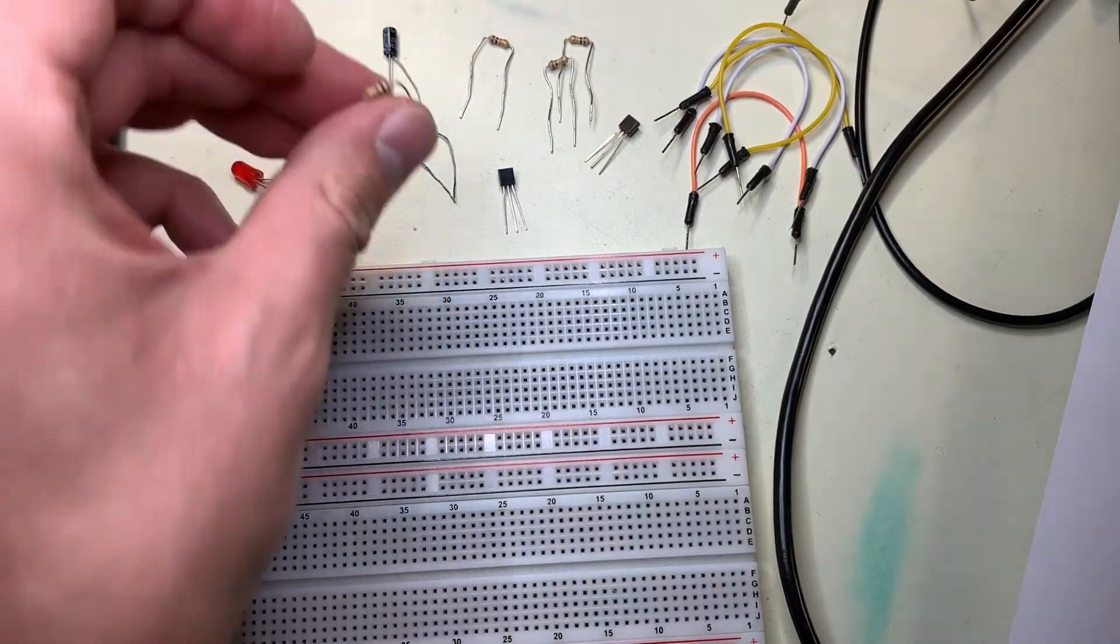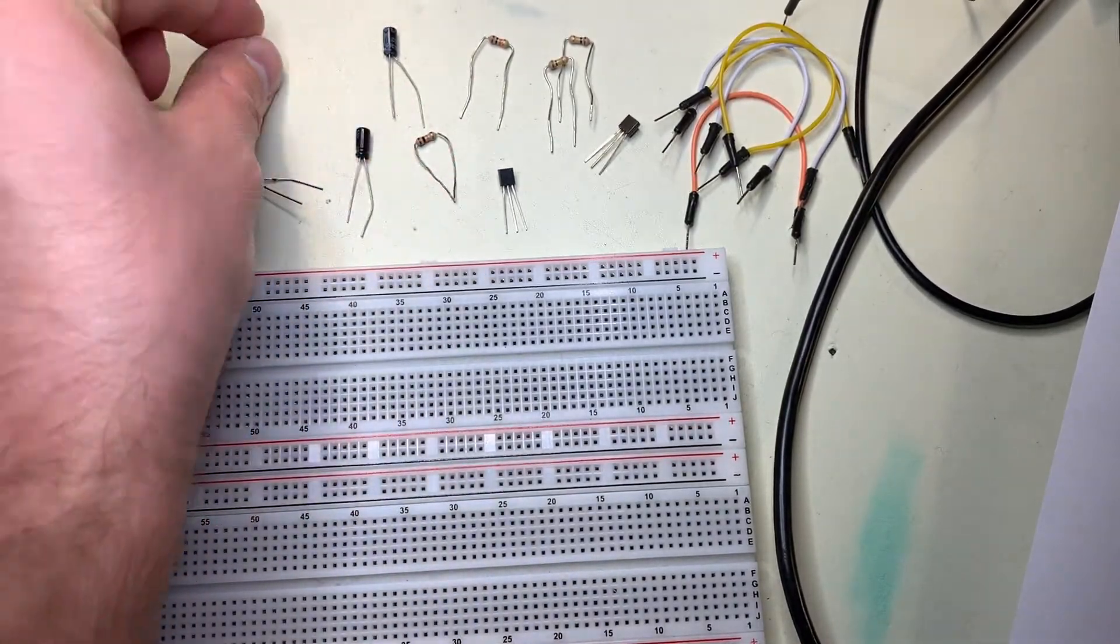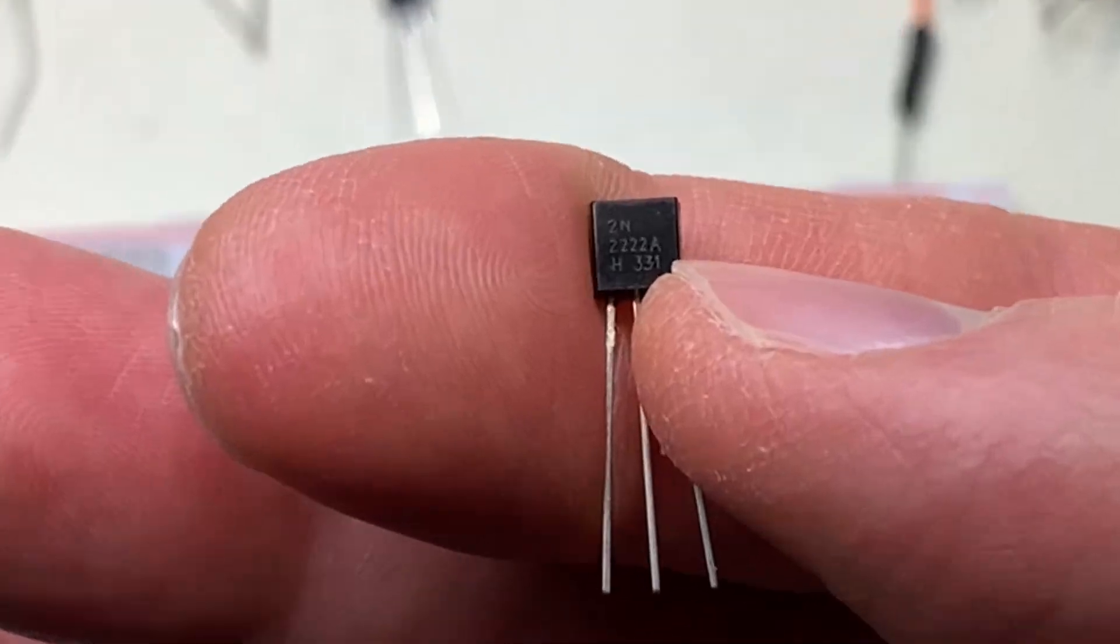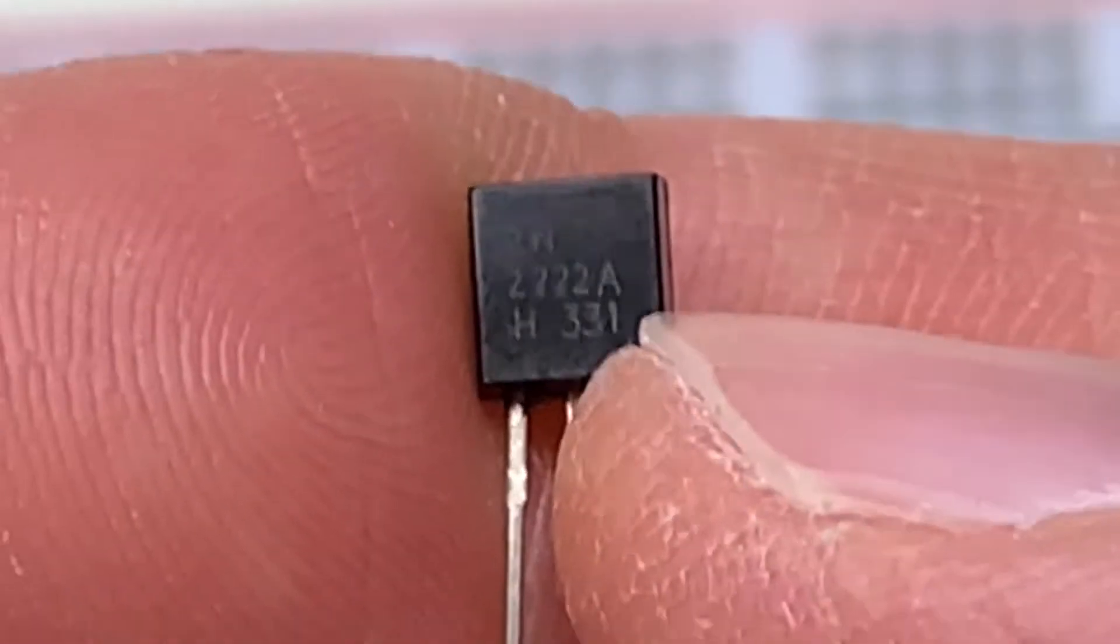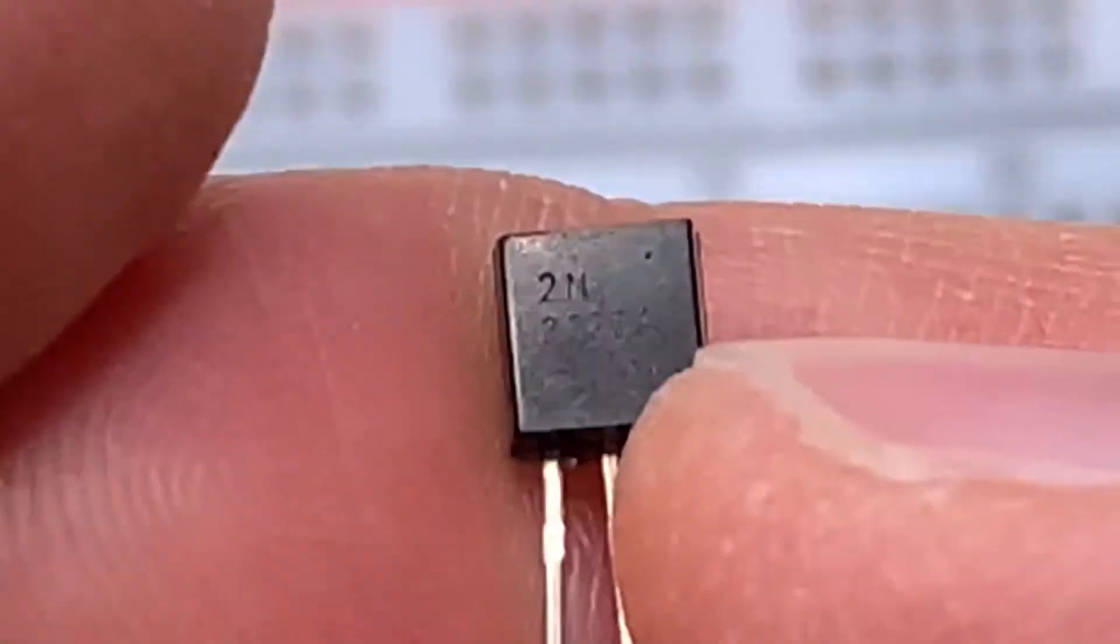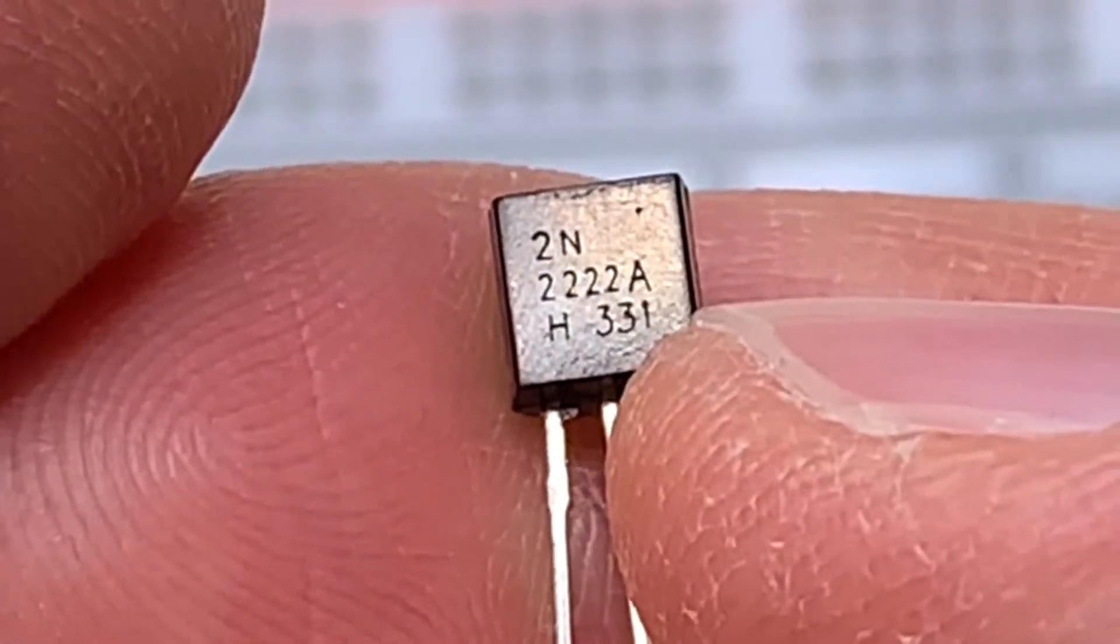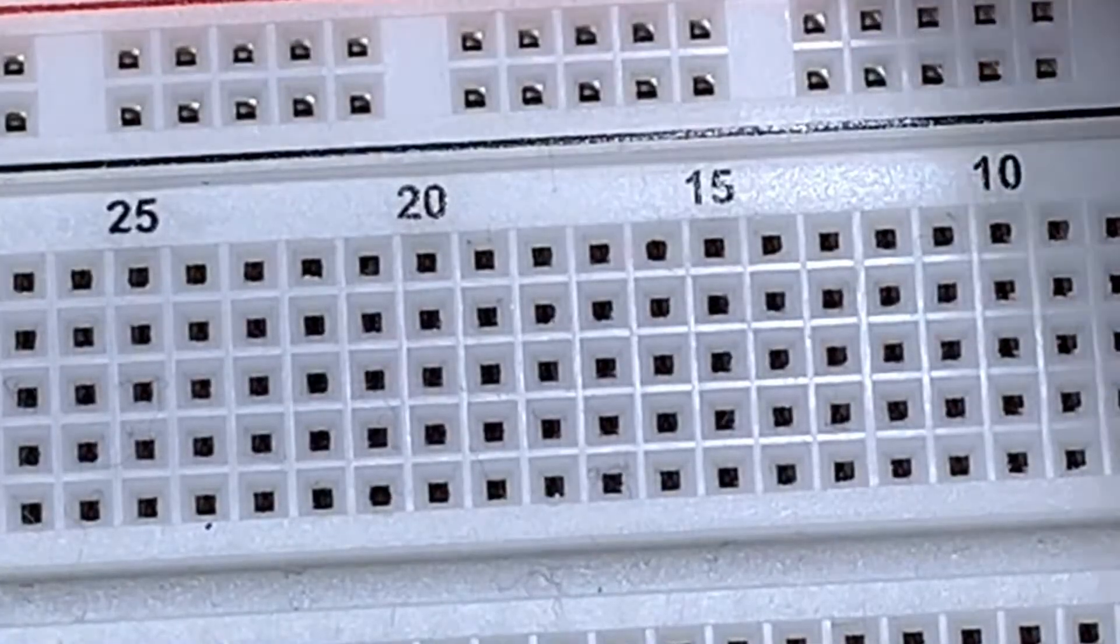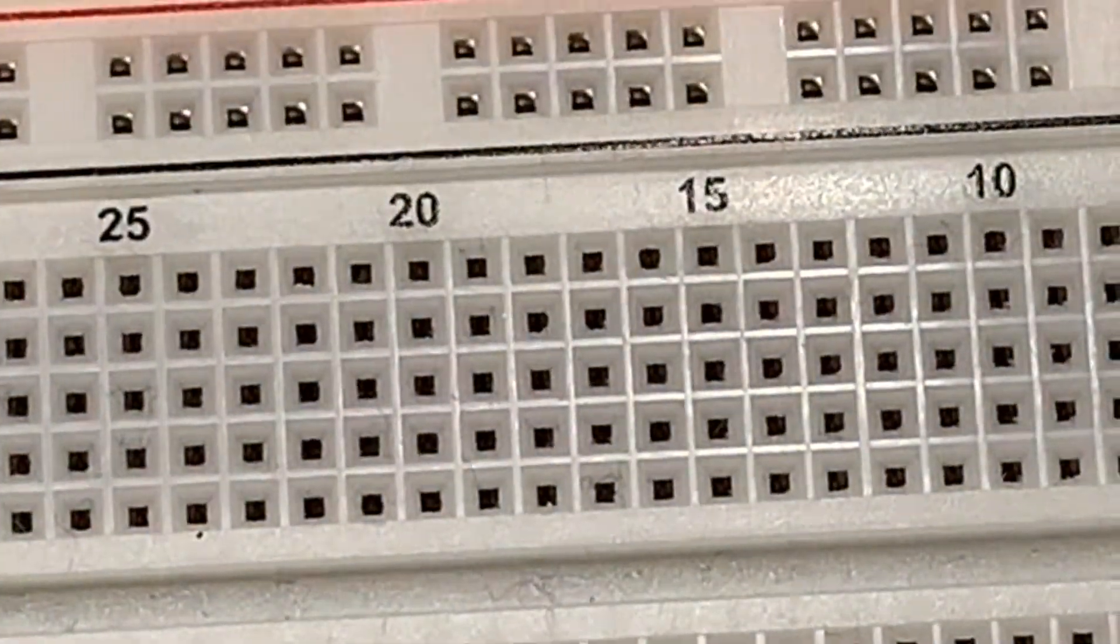LED, about a 1 kiloohm resistor, and these transistors here. Now these transistors can be a little bit hard to read, but you can see right there that's a 2N2222A, and your kit should have two of these. These are standard NPN bipolar transistors.